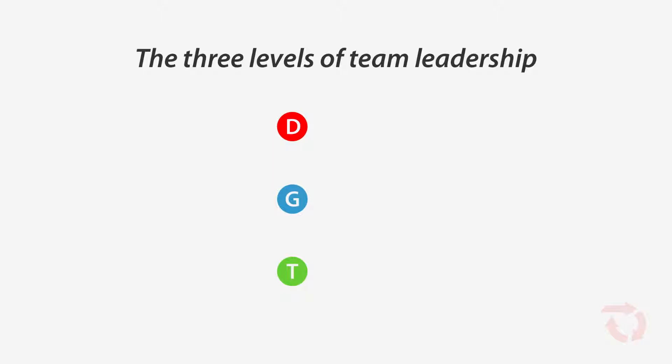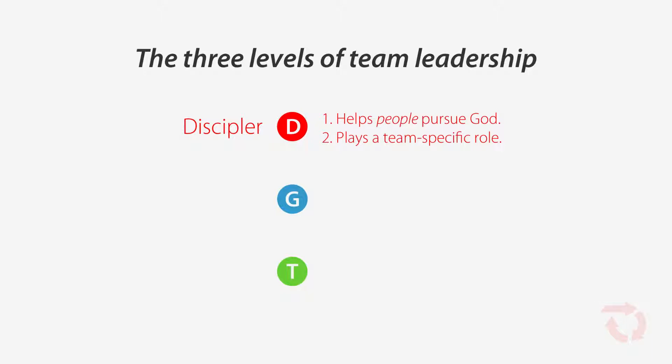Now with that in mind, let's talk about the three levels of team leadership. The first and most basic leader for any team is called a discipler. That might seem like a strange-sounding word, but remember the ultimate goal of our teams is to help people pursue God — so the most basic job of any leader at any level is to make disciples. Disciplers are the basic building blocks for any team; leadership starts here. A discipler has two roles: first, to help people pursue God — anyone in the group, on the team, or in the church at large. And second, to play a team-specific role. So the team-specific role of a drummer is to play the drums, or a small group leader is to lead a small group, or someone on the clean team cleans or mops floors. Leadership Training 101 will qualify you for this first level.